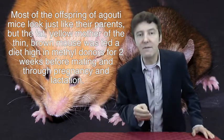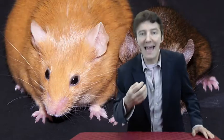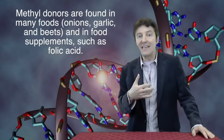Methyl donors are found in many foods, including onions, garlic, beets, and in food supplements such as folic acid, often given to pregnant women.